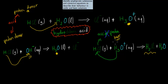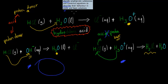The reason I went over this is because I'm going to talk about amphiprotic species — ones which can both accept and donate protons depending on which kind of solution they're in. The learning objective says: identify amphiprotic substances and construct equations to describe their behavior in acidic and basic solutions.